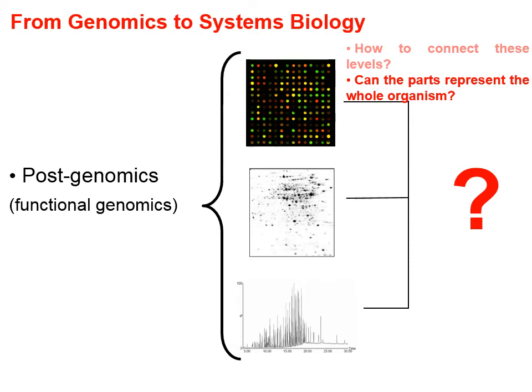These researchers are integrating information using tools from physics and mathematics to help understand this huge amount of data. Key questions arise: how do we connect these levels? Can the parts represent the whole organism? This is very important, because we assumed that analyzing a small part of an organism allows us to infer about the whole. But this is not right — sometimes you miss the main biological response because you are only analyzing the parts. The answer is no: we cannot rely solely on the parts; we have to look at the whole organism.